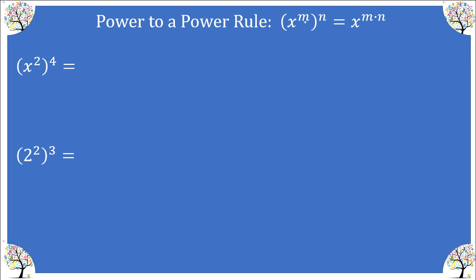Now let's talk about a power raised to a power. Here we have X raised to the power of M, which is all raised to the power of N — a power raised to a power. The rule says to multiply the exponents: the outside exponent is multiplied by the inside exponent. Let's take a look at two examples to show why this rule works. Here we have x squared raised to the power of four.